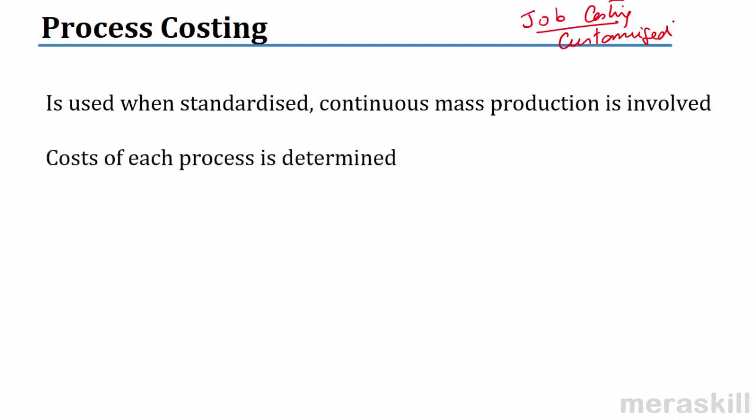How do you do process costing? The cost of each process is determined. Whether you do job costing or process costing, the final intention is to find out the cost per unit. If I am making 1000, 10,000, or 5000 units of a product, I want to know the cost per unit. If I am doing 5, 10, or 50 jobs, I might want to know the cost of each job.